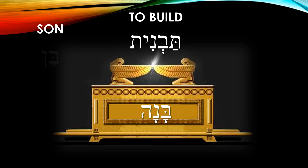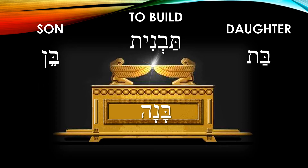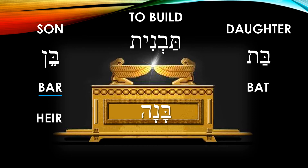In Hebrew, son is Ben; daughter is Bat. Do you remember when we discussed the Bar Mitzvah and the Bat Mitzvah? This was the age of accountability — the sons and the daughters of the commandments that are now ready to be wed, as they had passed Mother's teachings. Both Bar and Bat contain the same root of Benah. Bar is used instead of Ben, which also means a son, but it carries a slightly different meaning in that it means an heir apparent to the throne. The word Bar will be important later.